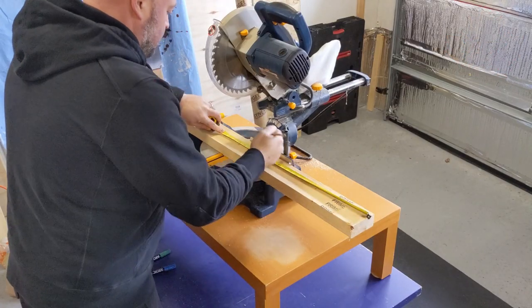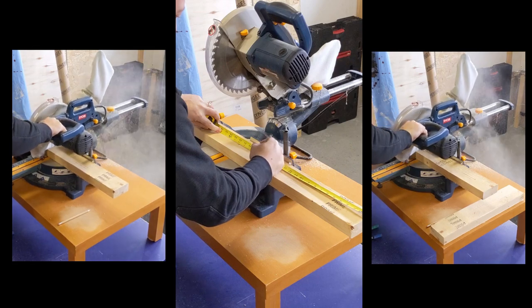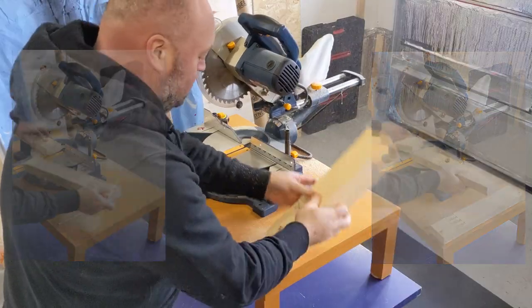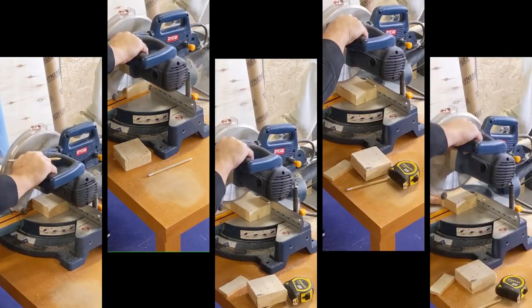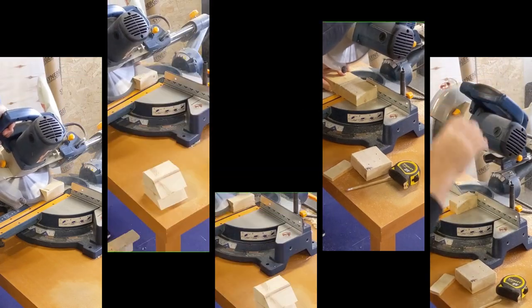The first step is to measure and cut the 18 inch vertical pieces. Then, cut out the 3.5 inch blocks, 6 of those. And finally, cut the chamfer into those blocks.